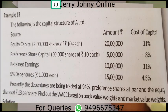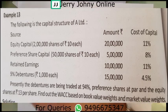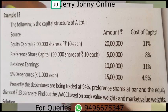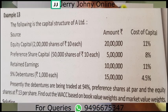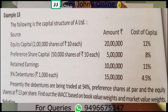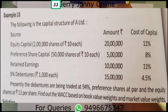The problem: the following is the capital structure of A Limited. The source and the amount of cost of capital are given. You have the cost of equity, cost of debt, cost of preference share. Once you have those individual costs, the weighted average cost of capital is calculated.